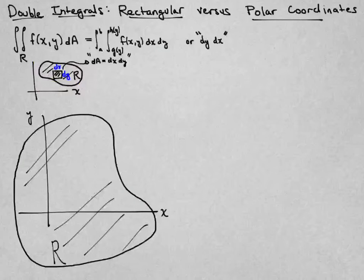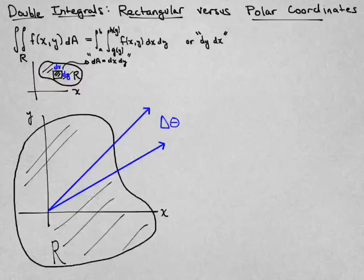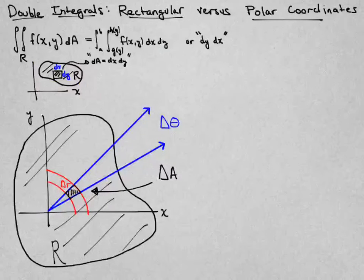If I want to integrate in polar coordinates, however, I need to think about not a change in X and a change in Y, but I should think about a change in the angle, which I'm representing there with delta theta, and that's a small change in the angle. And then a corresponding change in the radius, which I've represented with delta R here. And what we get is not a rectangular patch, but a little slice of the circular sector of area that we're seeing here. And so let's call that delta A now.